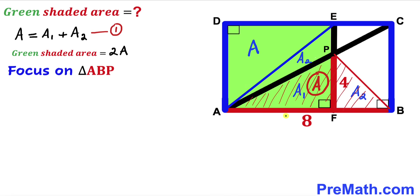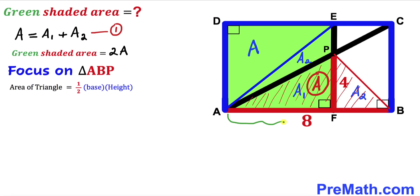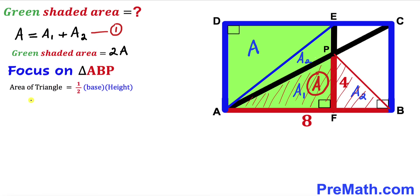Now we are going to calculate the area of triangle ABP. Recalling the triangle area formula: area equals one-half times base times height. For triangle ABP, the base is 8 units and the height is 4 units. So uppercase A equals one-half times 8 times 4. Multiplying and simplifying, uppercase A equals 16 square units.